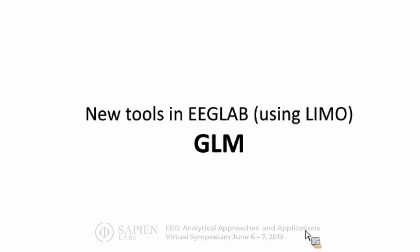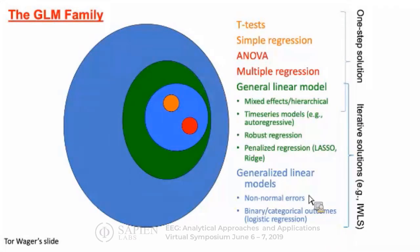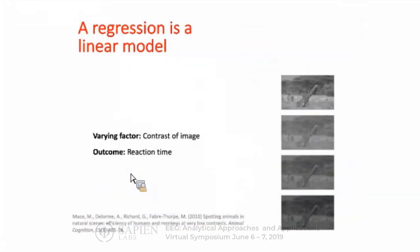Now I'm going to talk about the new tools in EEG Lab — in particular, the general linear model. This is using LIMO, which is an extension to EEG Lab, and this is a collaboration with Cyril Pernet at the University of Edinburgh. The GLM is really a technique that can replace all the statistical tests. Here the blue region shows images of different contrasts, and what we're measuring is reaction time — how can we model variation of contrast with reaction time?